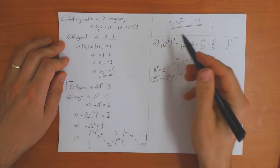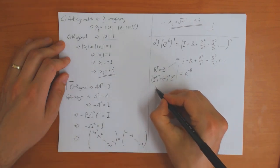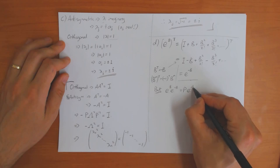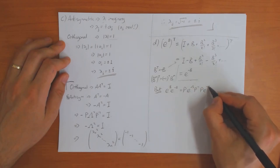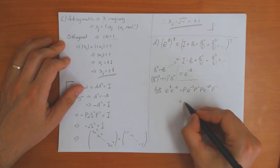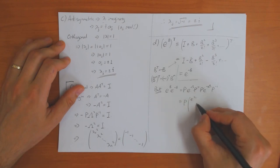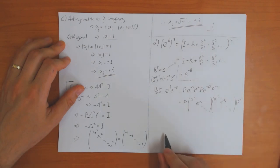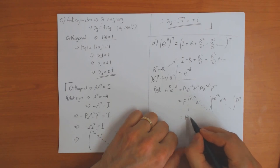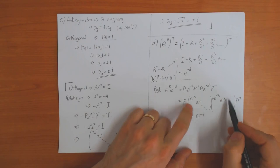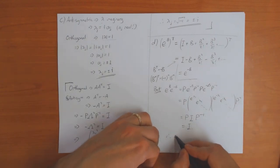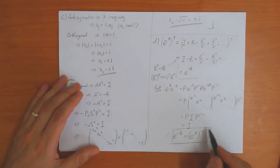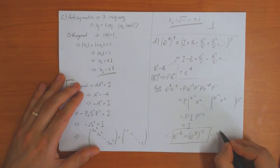To confirm these are inverse matrices, using the diagonalization formula: e^B · e^(−B) = P·e^Λ·P⁻¹ · P·e^(−Λ)·P⁻¹ = P · e^Λ · e^(−Λ) · P⁻¹ = P · I · P⁻¹ = I. So e^(−B) = (e^B)⁻¹, exactly as for numbers. This shows (e^B)^T = (e^B)⁻¹, so e^B is orthogonal.